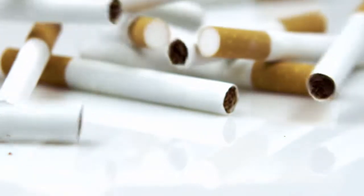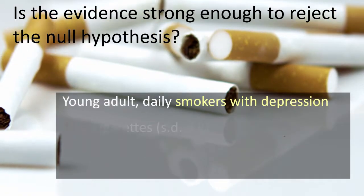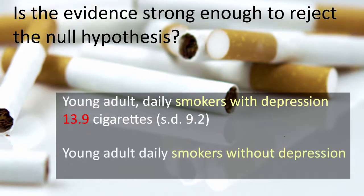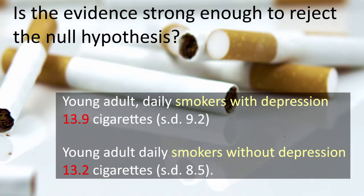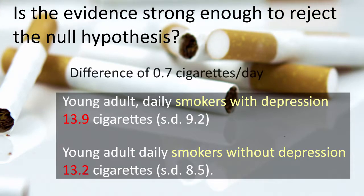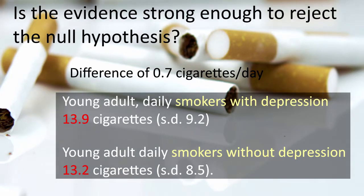So now we need to assess the evidence in order to determine whether the data provides strong enough evidence against the null hypothesis — that is, against the claim that there is no relationship between smoking and depression. We really need to ask ourselves: how surprising or rare is it to get a difference of 0.7 cigarettes smoked per day between our two groups, assuming that the null hypothesis is true? This is the step where we calculate how likely it is to get data like this when the null hypothesis is true. In a sense, this is really the heart of the process, since we draw our conclusions based on the probability estimate.